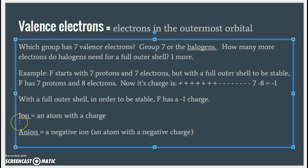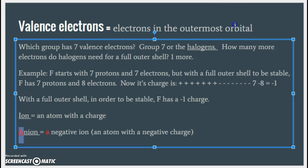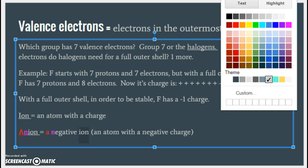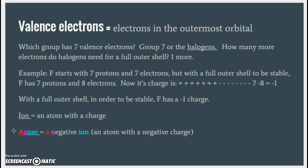That brings us to two new vocabulary words. The first is ion — an ion is any atom with a charge. An anion is a negative ion, specifically an atom with a negative charge. An easy way to remember: the word 'ion' is right inside the word 'anion,' so it's a negative ion. Make sure you have those two words added to your notes.